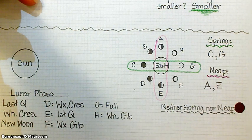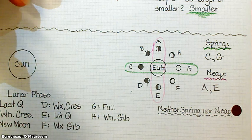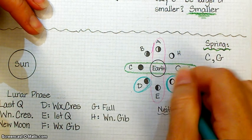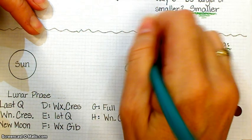And which positions are neither spring nor neap? D, F, H, and B.